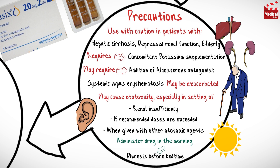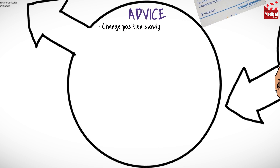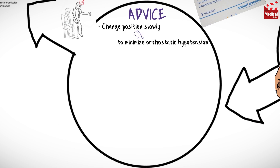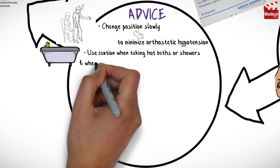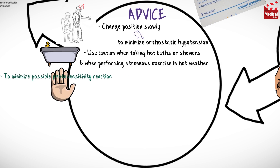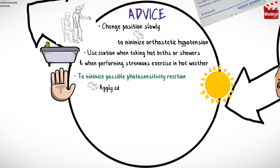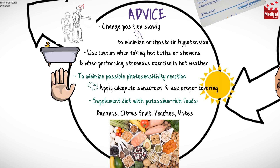Administer this drug in the morning to promote diuresis before bedtime. Change positions slowly, in particular from recumbent to upright, to minimize orthostatic hypotension. Use caution when taking hot baths or showers and when performing strenuous exercise in hot weather, and don't stand in one position for a prolonged period. To minimize possible photosensitivity reactions, apply adequate sunscreen and use proper covering when exposed to strong sunlight. Supplement the diet with potassium-rich foods such as bananas, citrus fruit, peaches, and dates.